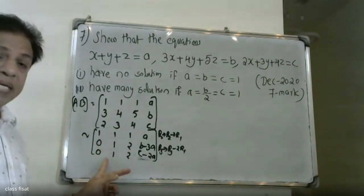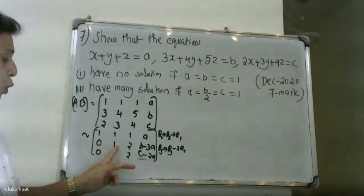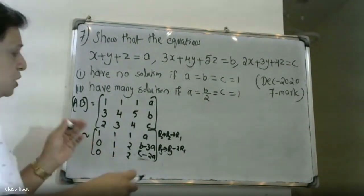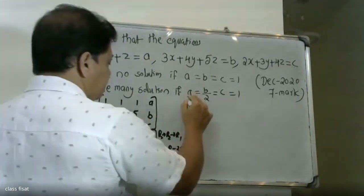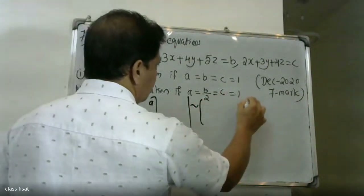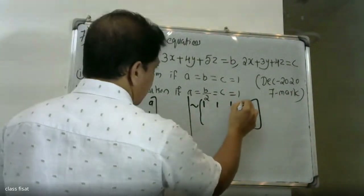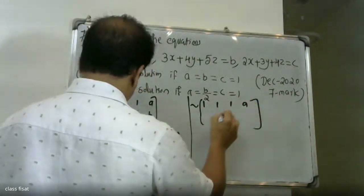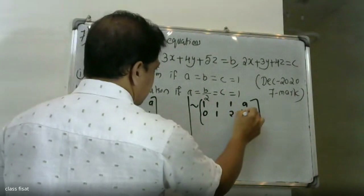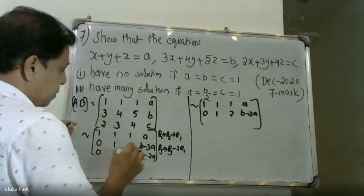The resulting matrix so far: first row 1, 1, 1, a; second row 0, 1, 2, b minus 3a; third row 0, 1, 2, c minus 2a.